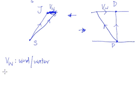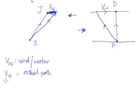The next vector is VA, which stands for the actual path. What you must understand is that VA — where A stands for aeroplane. If you have a boat, it'll be VB. If you have a canoe, it'll be VC, and so on. This is quite a variable; you can use any letter you like. For our sake here, we'll use A because we're talking about an aeroplane.